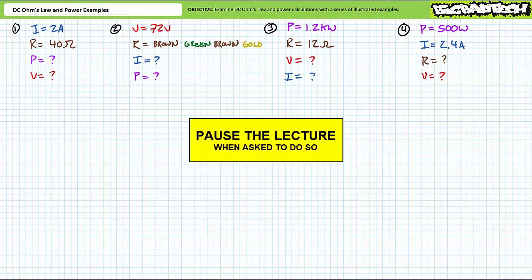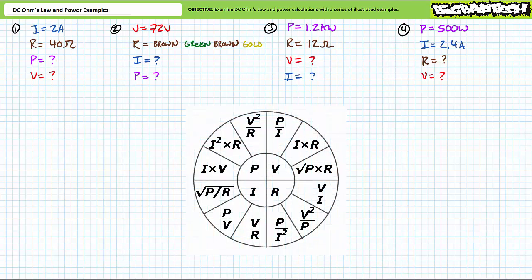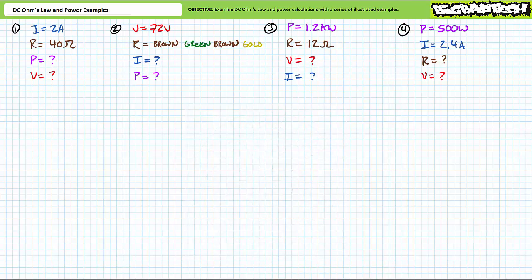If your answers don't match those illustrated, feel free to rewind the lecture and correct any mistakes you may have made. Before we begin, a recommended accessory for this lecture is the visual aid showing all 12 permutations of DC Ohm's Law and power equations. We'll use each permutation more than once during the course of this lecture. If you're super confident, by all means try it without a net. Given the numerous options available to us, it should be noted that there is more than one way to solve for these problems.